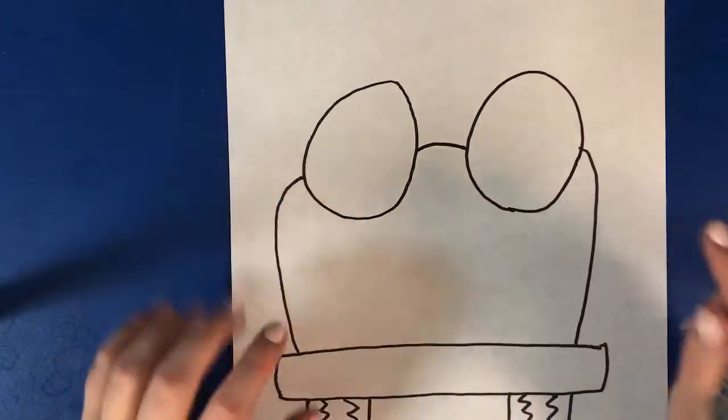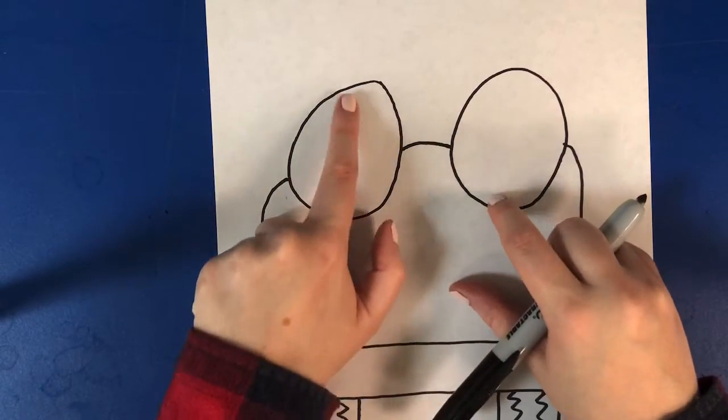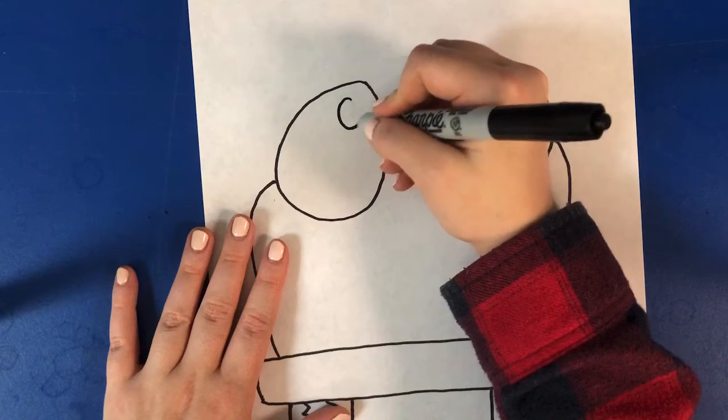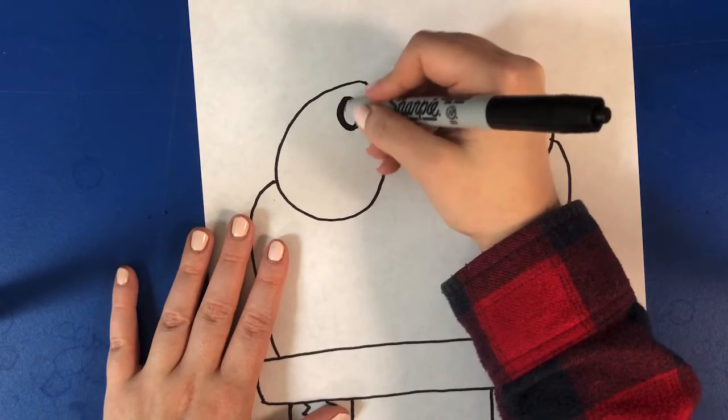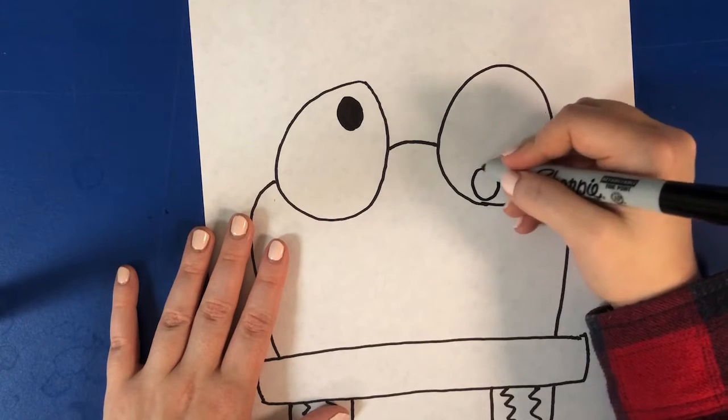It's up to you where you want to put the middle part of your eye. You can make it looking any direction you want. I am going to do crazy eyes, so I'm going to have one looking up and one looking down.